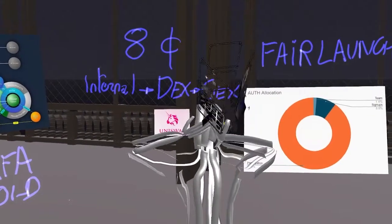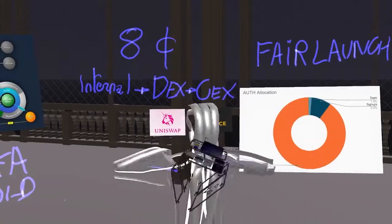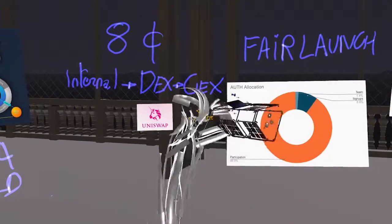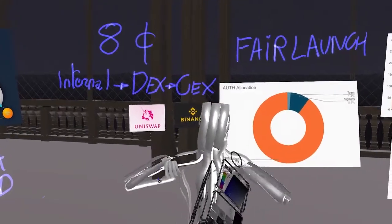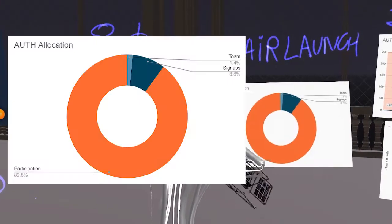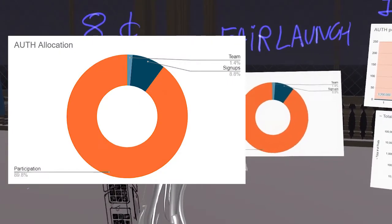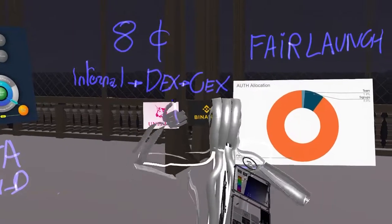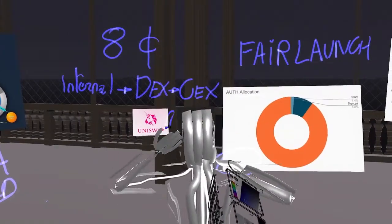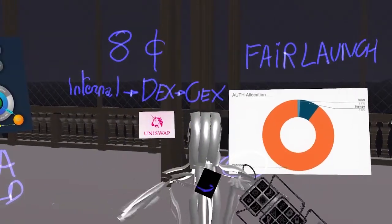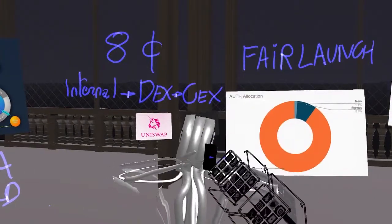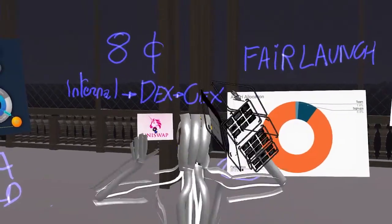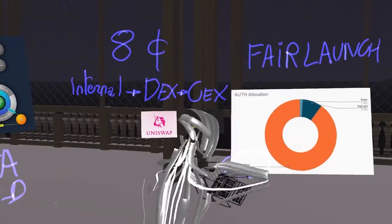The first thing that is important when you are analyzing a token is the allocation. The allocation is how do people get the token. So in this case for Authenticity, most of the token, 89.8%, is actually mined by participating on the Authenticity platform. So it's mined by its users by posting comments, by posting images, by posting videos, depending on the amount of characters in each comment. This is how almost all of the host tokens are minted.